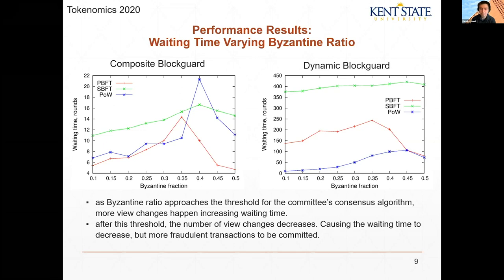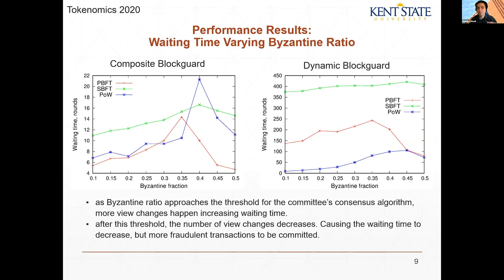For dynamic, we see a similar pattern where waiting time dives down as the Byzantine fraction increases, because they're just committing fraudulent transactions. It does tend upward as it approaches the respective tolerances. SBFT is the least noticeable — working inside a synchronous system, the delay is already so high that this peak is hidden.